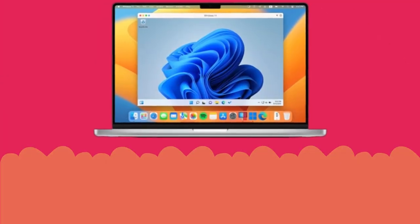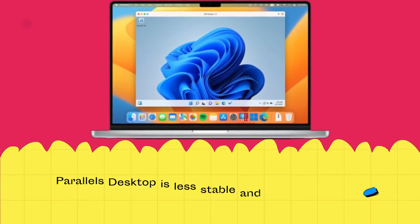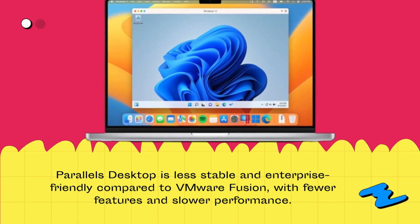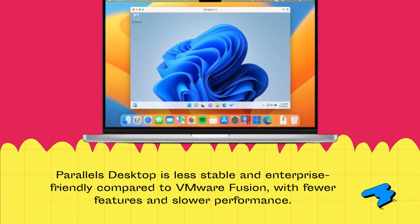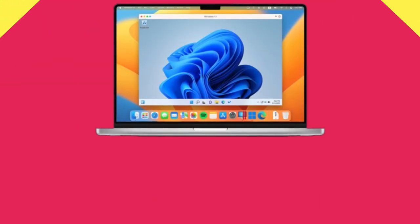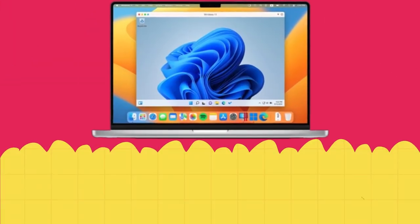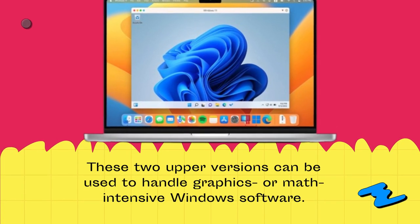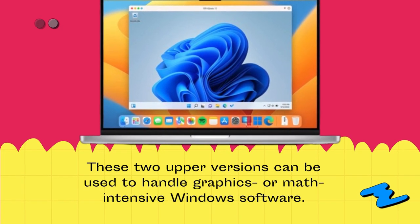Parallels Desktop is less stable and enterprise-friendly compared to VMware Fusion, with fewer features and slower performance. The two upper versions can be used to handle graphics or map-intensive Windows software.